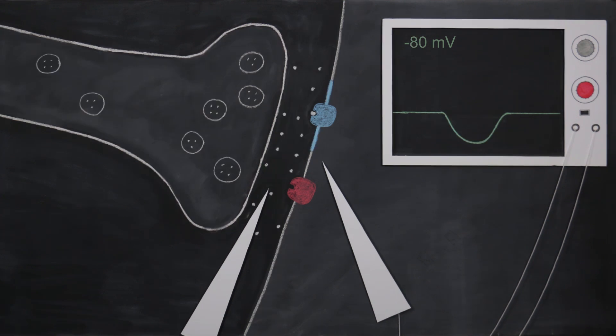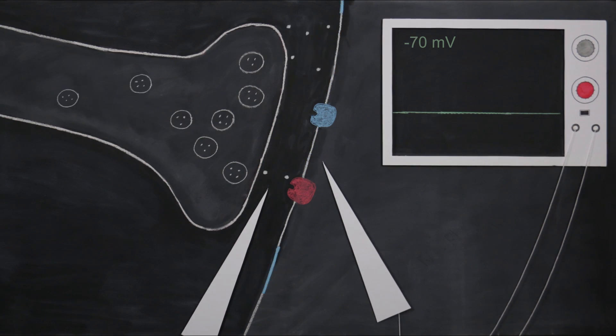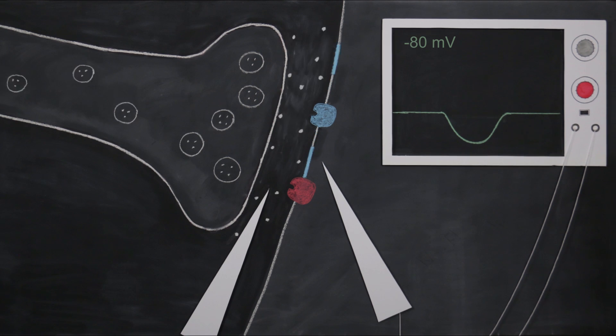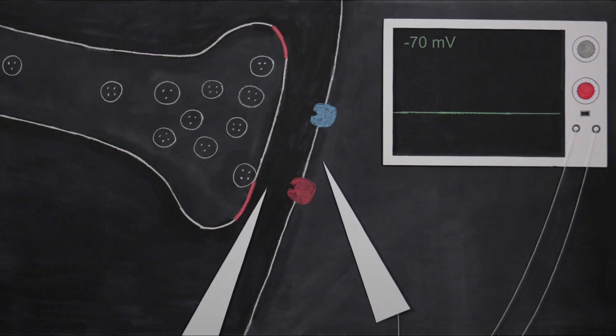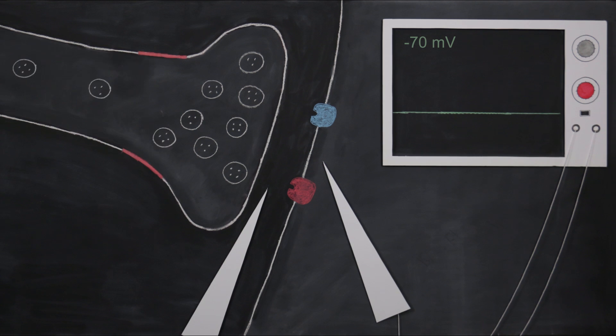When neurotransmitters bind to postsynaptic receptors, they typically have one of two effects. The first possible effect they might have is to hyperpolarize the receptive membrane. That is, increasing the polarization of the membrane potential. We can see this hyperpolarization as a downward deflection on the oscilloscope.